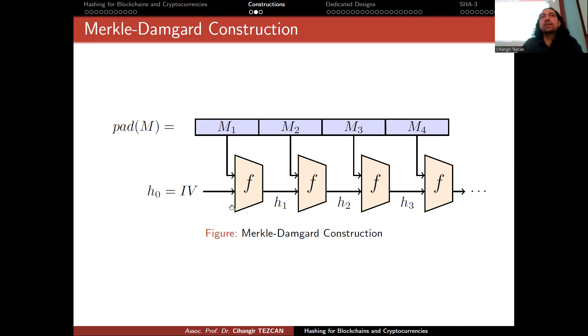You have a compression function f. It takes two inputs: initially takes the IV (initialization vector) and your first message block. Actually, generally these two inputs are larger than the output, so this is why we have this kind of geometric representation. If you have a single block, this is put into the compression function there and the output is produced.